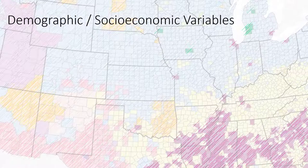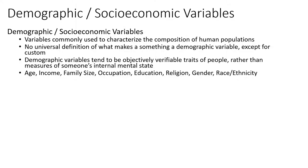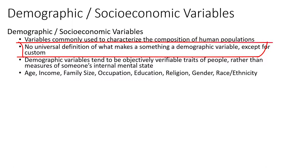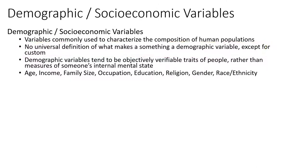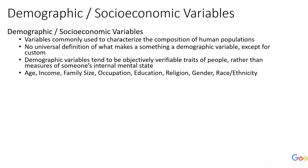Let's first introduce ourselves to demographic and socioeconomic variables. These are the type of variables commonly used to characterize the composition of human populations. You're probably familiar with the words demographics and socioeconomics. There is actually no universal definition of what constitutes a demographic variable versus not a demographic variable, except for common practice. If you Google it, you'll notice that in most cases the definitions aren't really definitions — instead, they're just providing a list of examples of those types of variables we study.